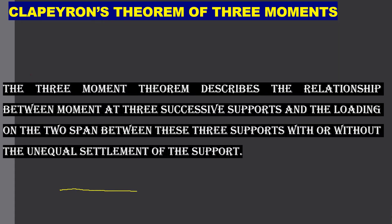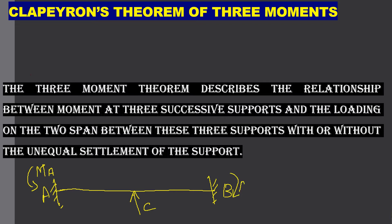That means, suppose we have three supports A, B, and C. The moment at A — since the support at A is fixed — we will have a moment at A, taken as M_A. We will have a moment at B, taken as M_B, and there will be a moment at C, that is M_C. This is the relationship between moments at three successive supports and the loading on the two spans between those three supports.